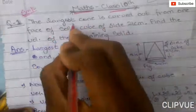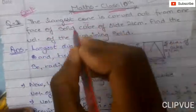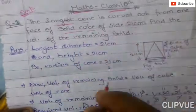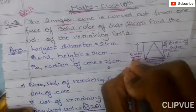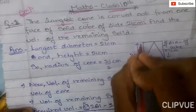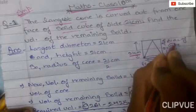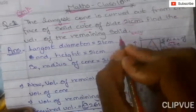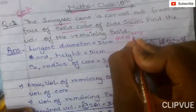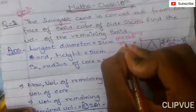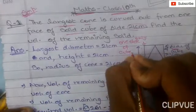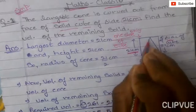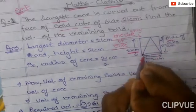The question is: the largest cone is carved out from one face of a solid cube of side 21 cm. Find the volume of the remaining solid. In this question we have a cube from which we have cut out the largest cone from one side. Now we will see what the diameter and height will be.